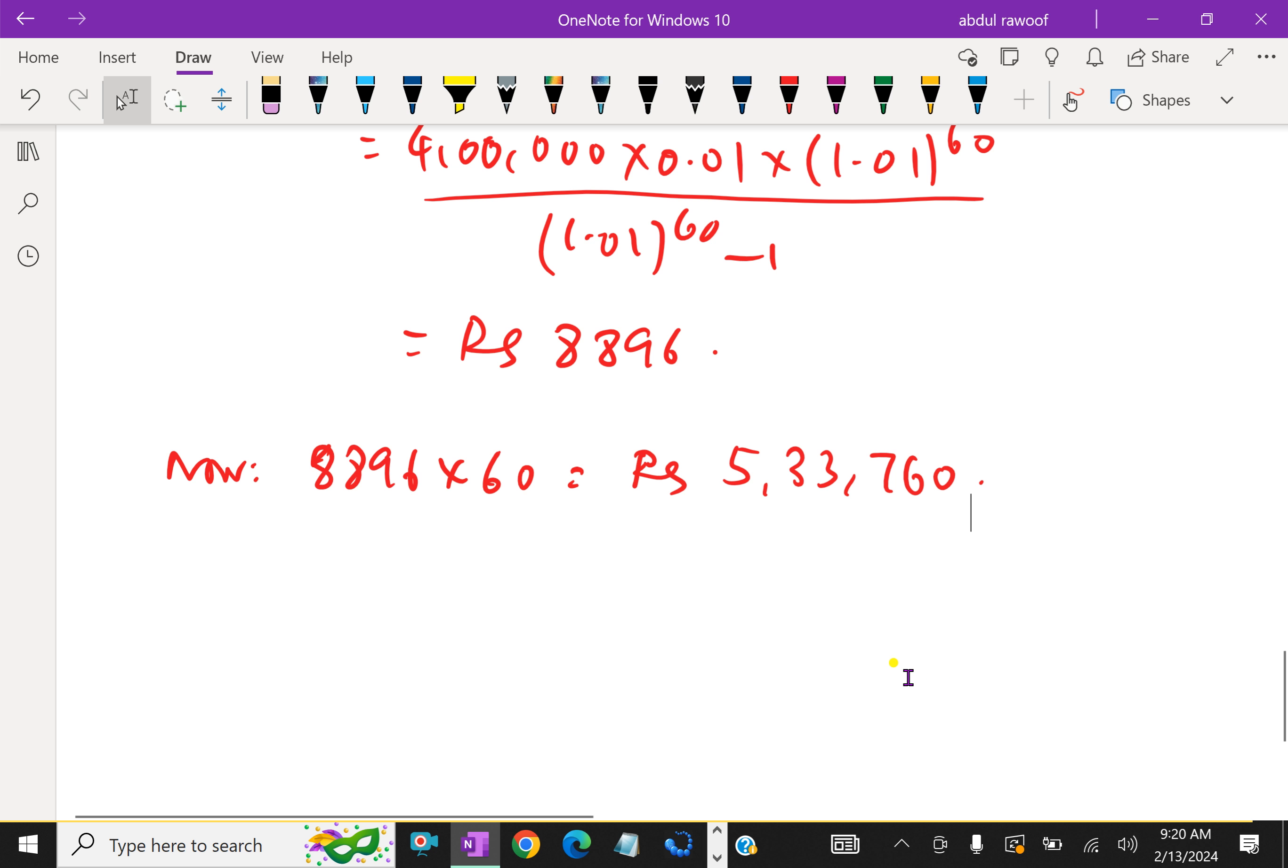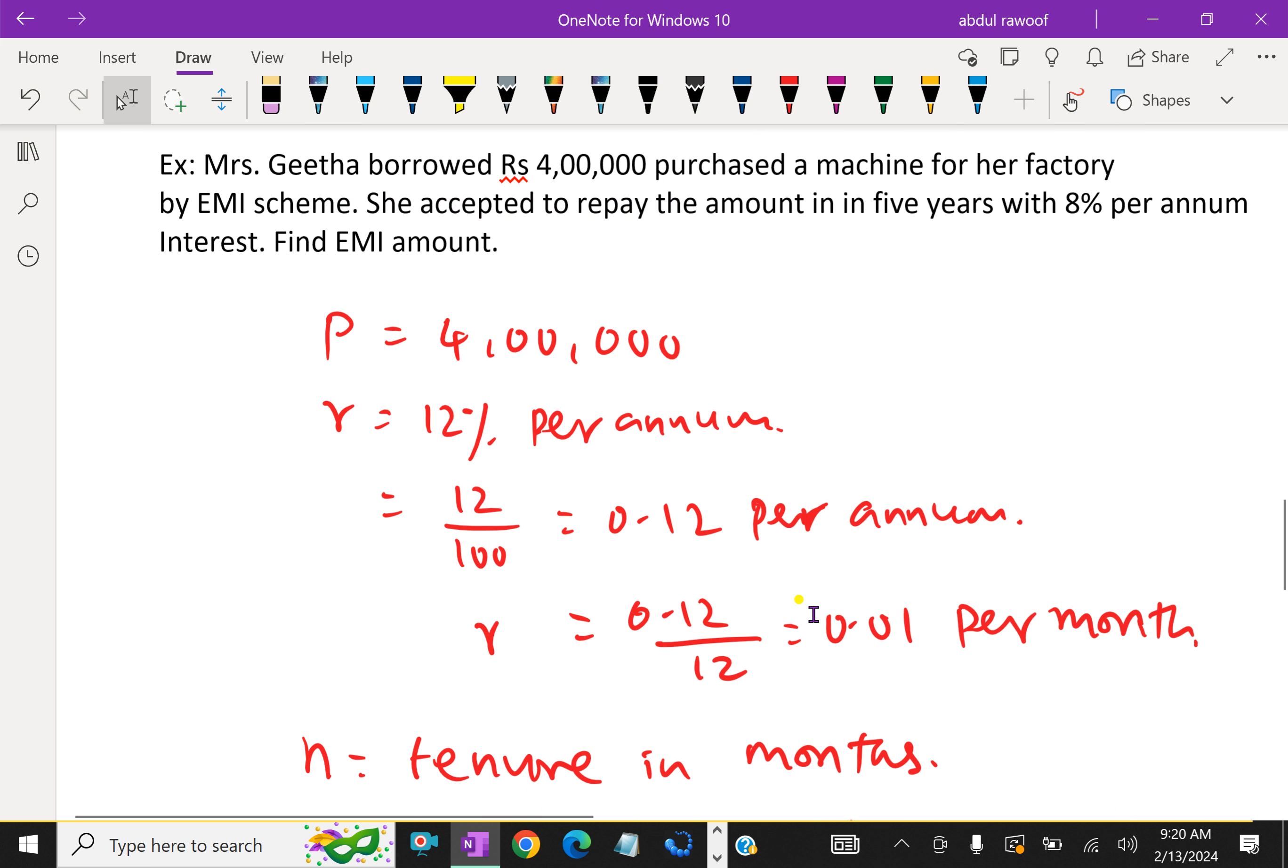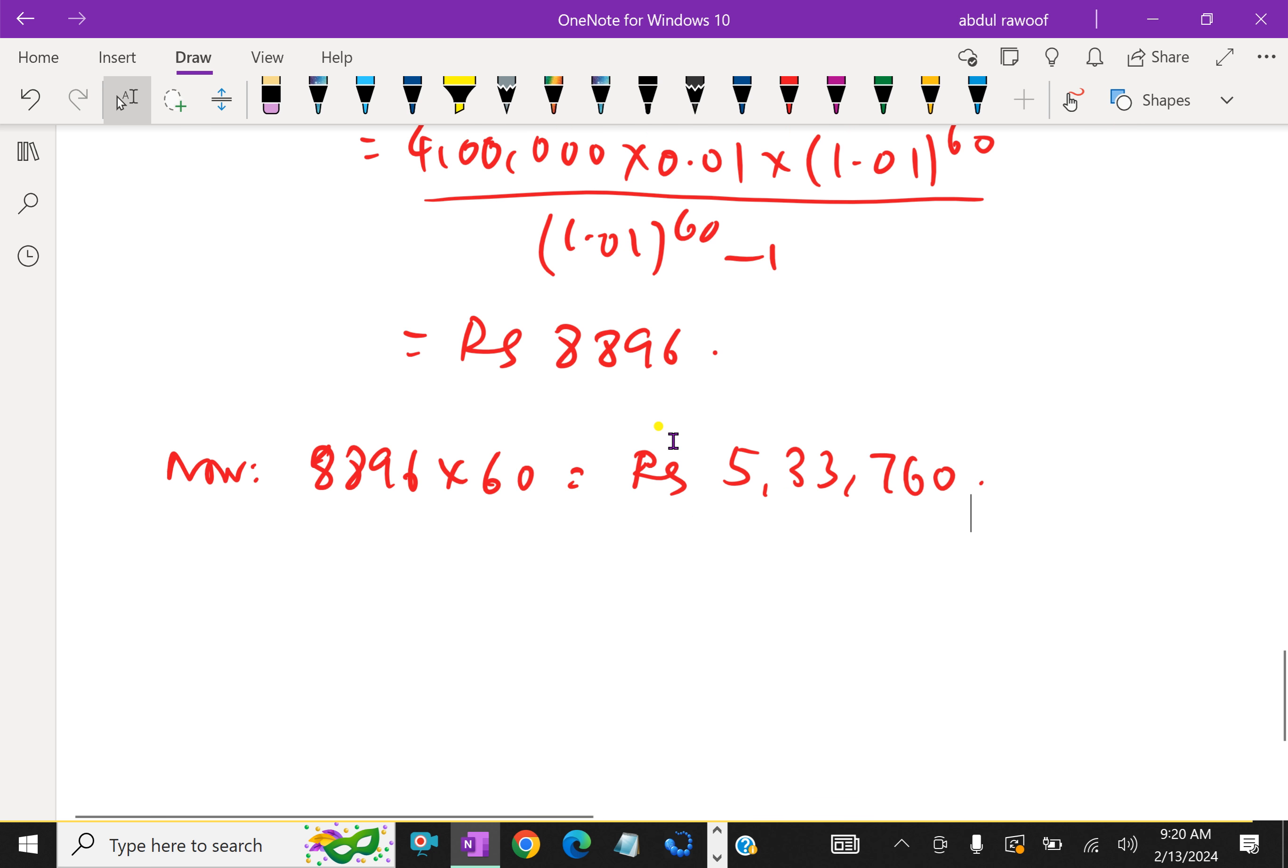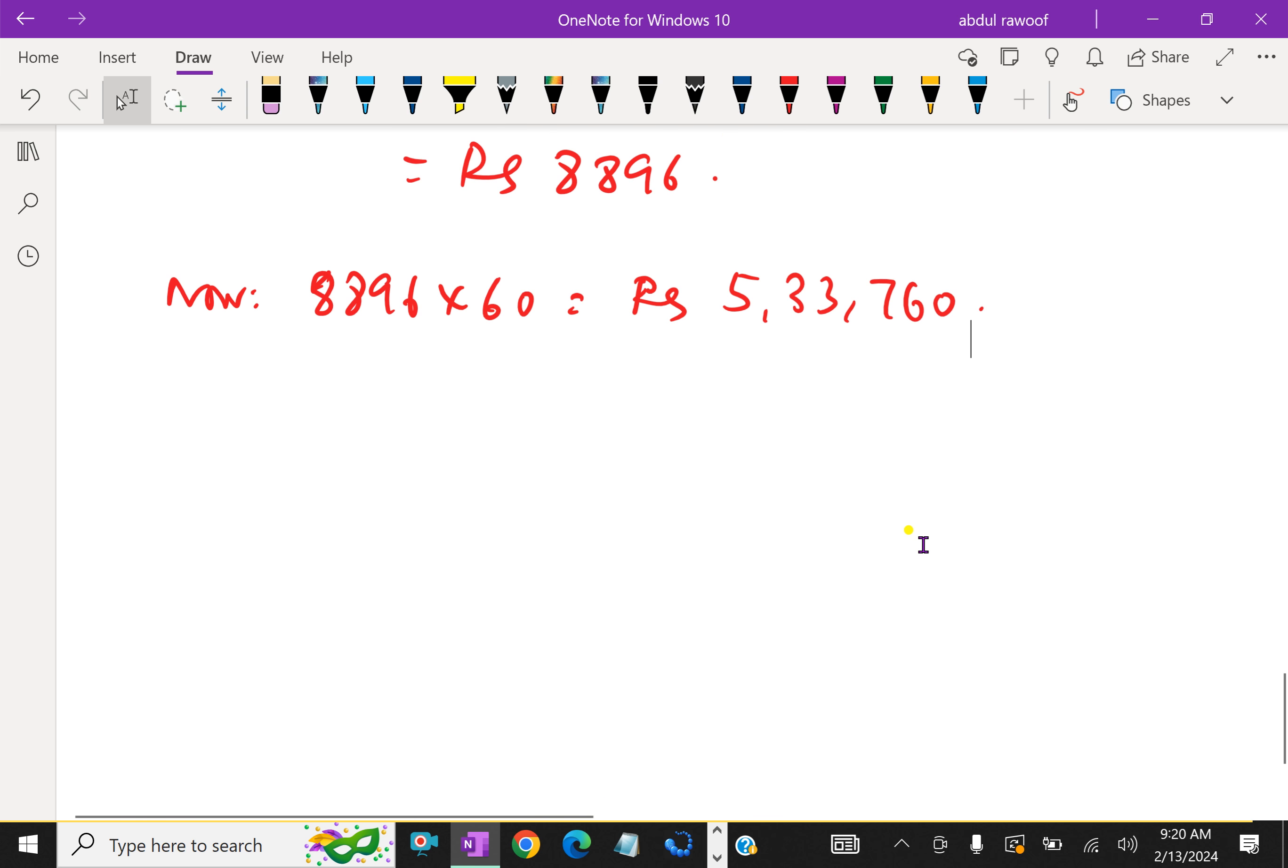So she took a loan of 4 lakhs, but she has to pay 5 lakhs 33,760. Therefore, interest is 5,33,760 minus 4 lakhs, which is equal to 1 lakh 33,760. This much extra money she has to pay.